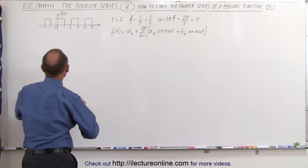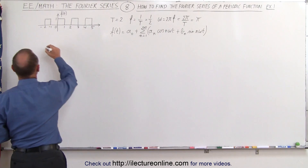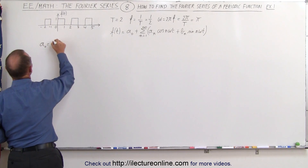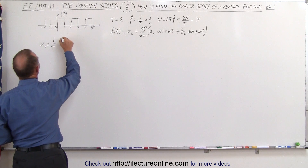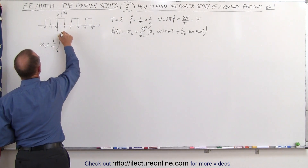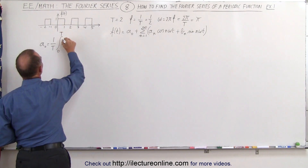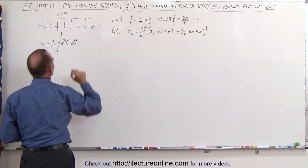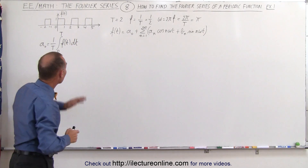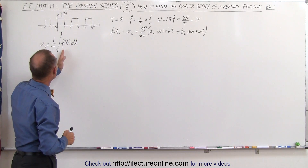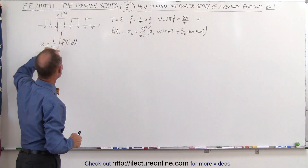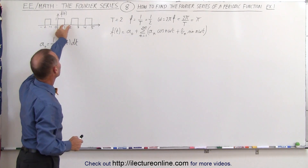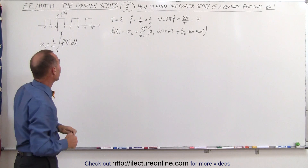Starting out with a sub 0: a sub 0 is equal to 1 over the period times the integral from 0 to the period of the function dt. We realize that the function only equals 1 from 0 to 1, and we don't have to integrate all the way from 0 to 2 because the function is equal to 0 from 1 to 2.